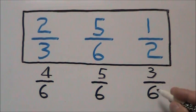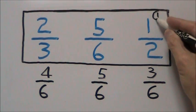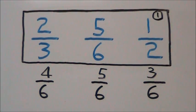So three-sixths is the fraction that has the least value. It corresponds to one-half, so one-half will be the fraction that has the least value.